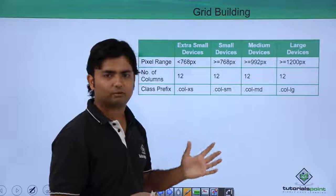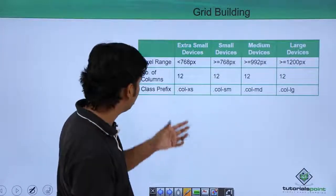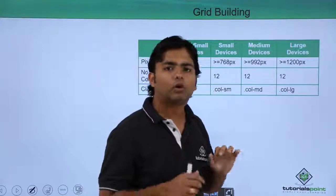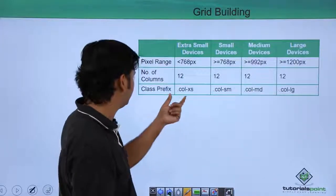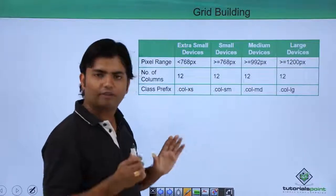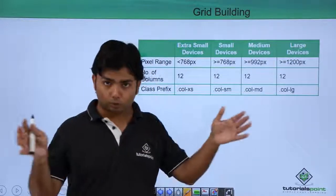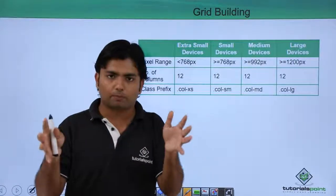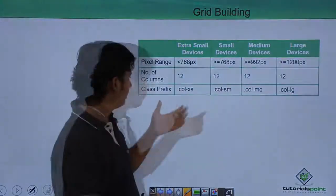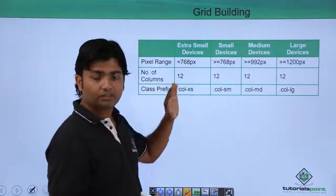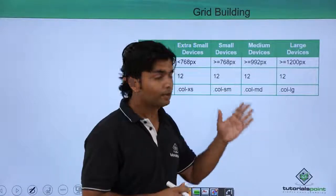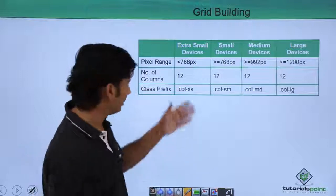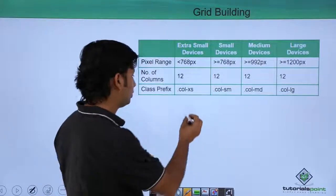For a mobile device — maybe a 5 or 5.5-inch screen — the number of columns will be 12 for all screen sizes. The class prefix is used when splitting those 12 columns, specifying how many columns a particular element should occupy. These Bootstrap CSS class prefixes help you split the 12 columns for extra small devices.